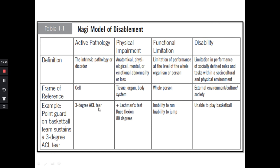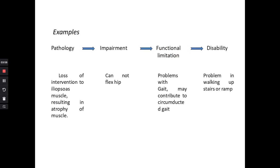Due to the third-degree injury, the patient is unable to run and unable to jump — this is the functional limitation of the patient according to NEGI. And last, disability means restriction at the society level. Due to the third-degree injury, the patient is unable to play basketball — that is what disability means according to NEGI.